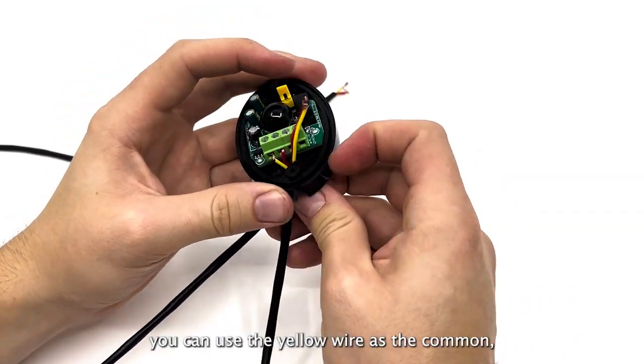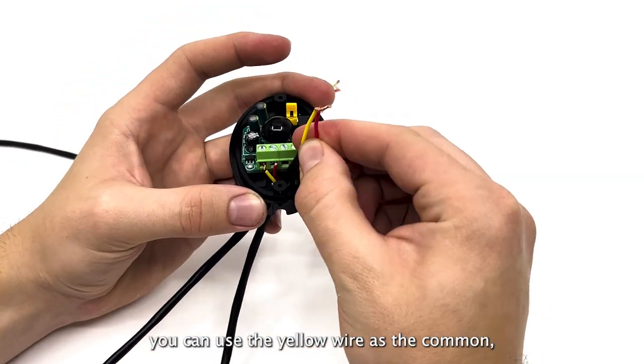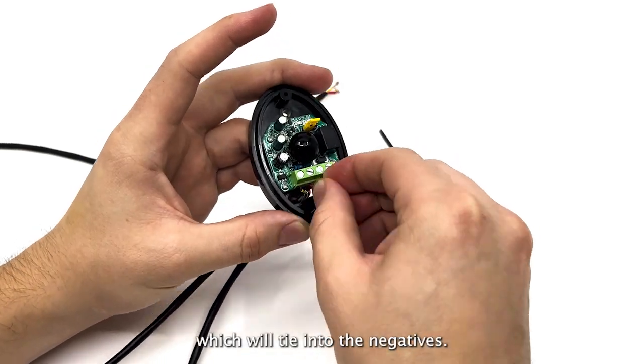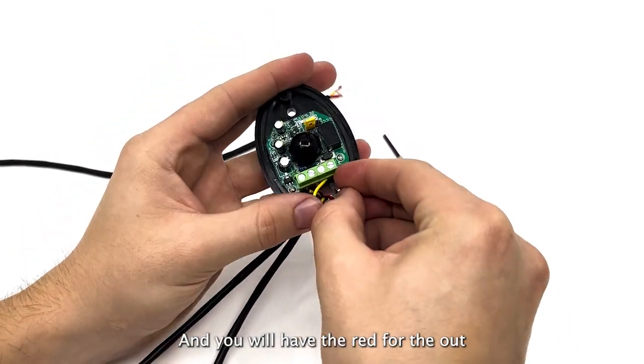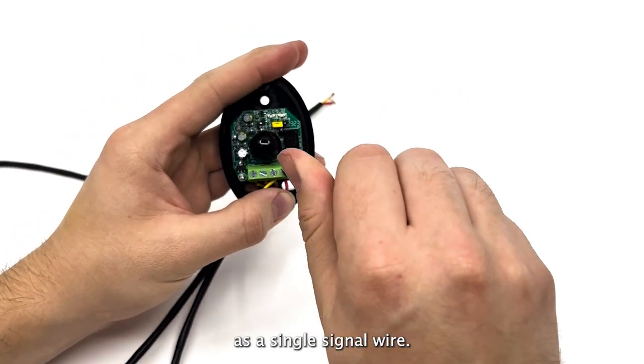To make it easier, you can use the yellow wire as the common, which will tie in to the negatives. And you'll have the red for the OUT single signal wire.